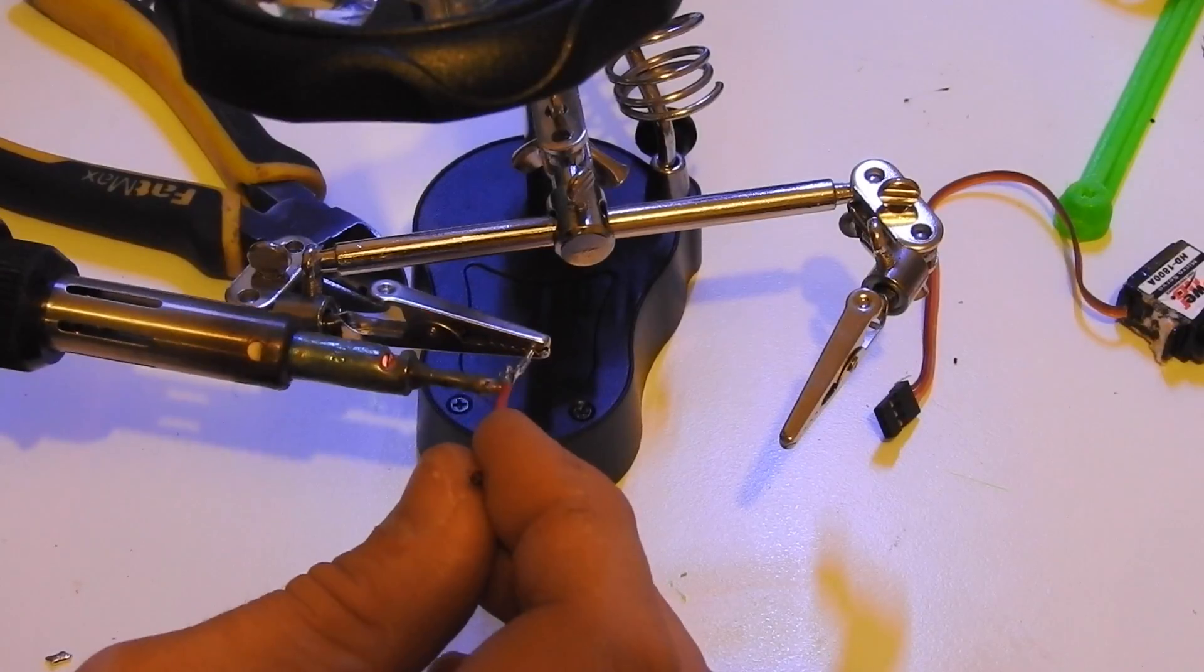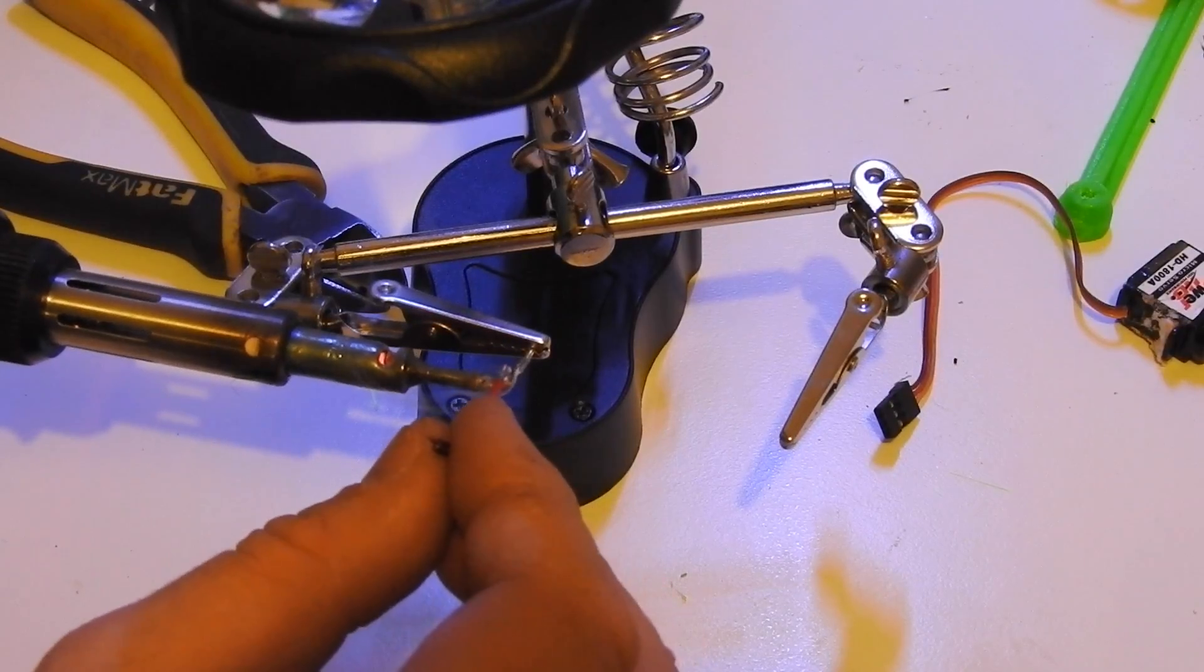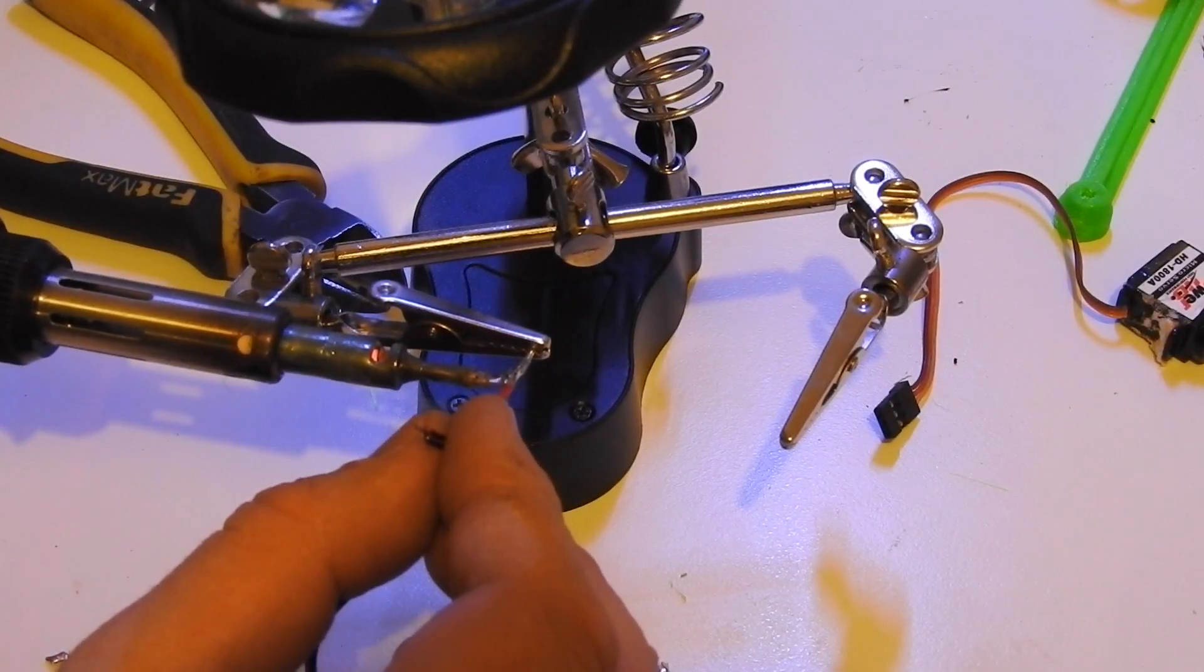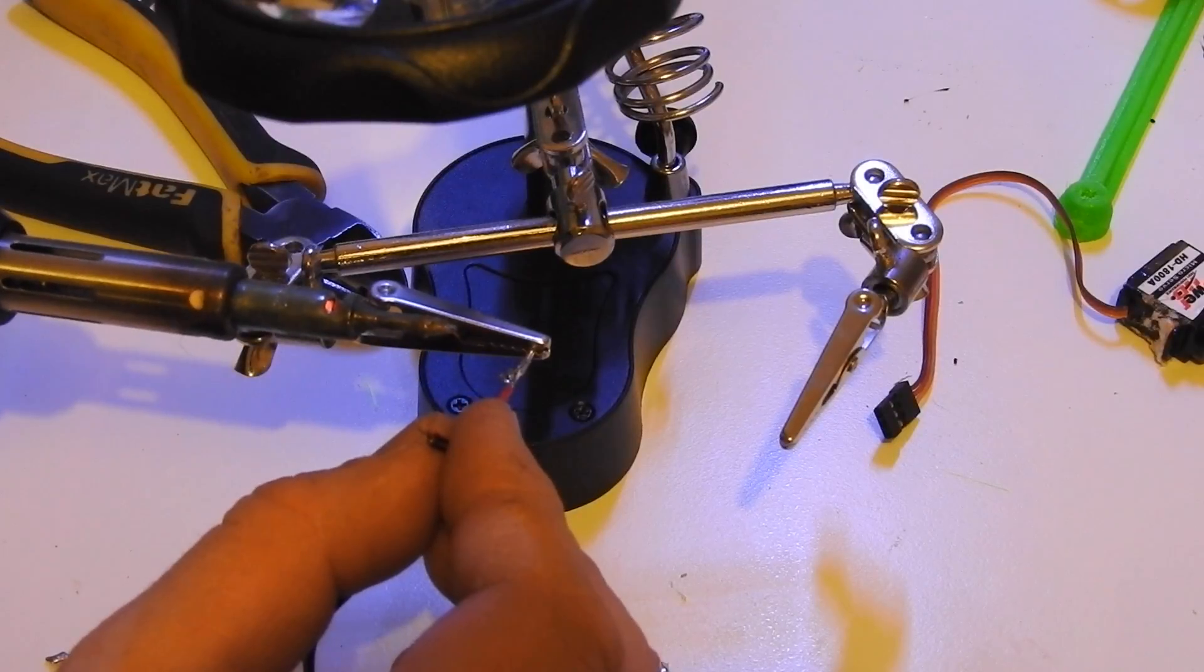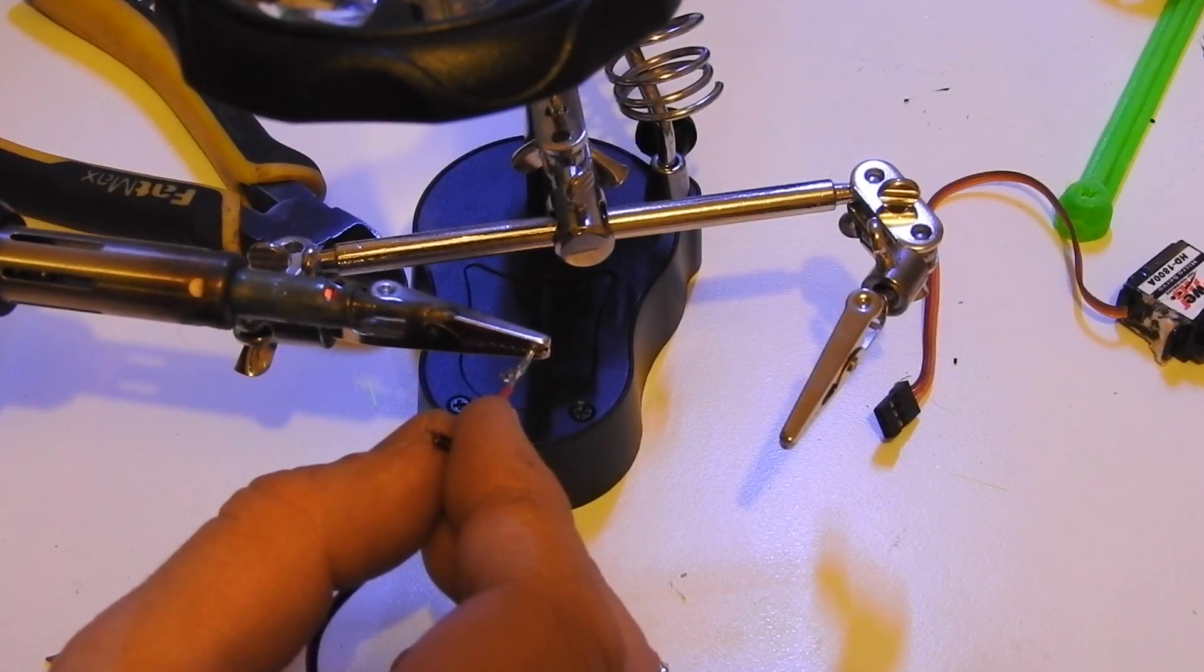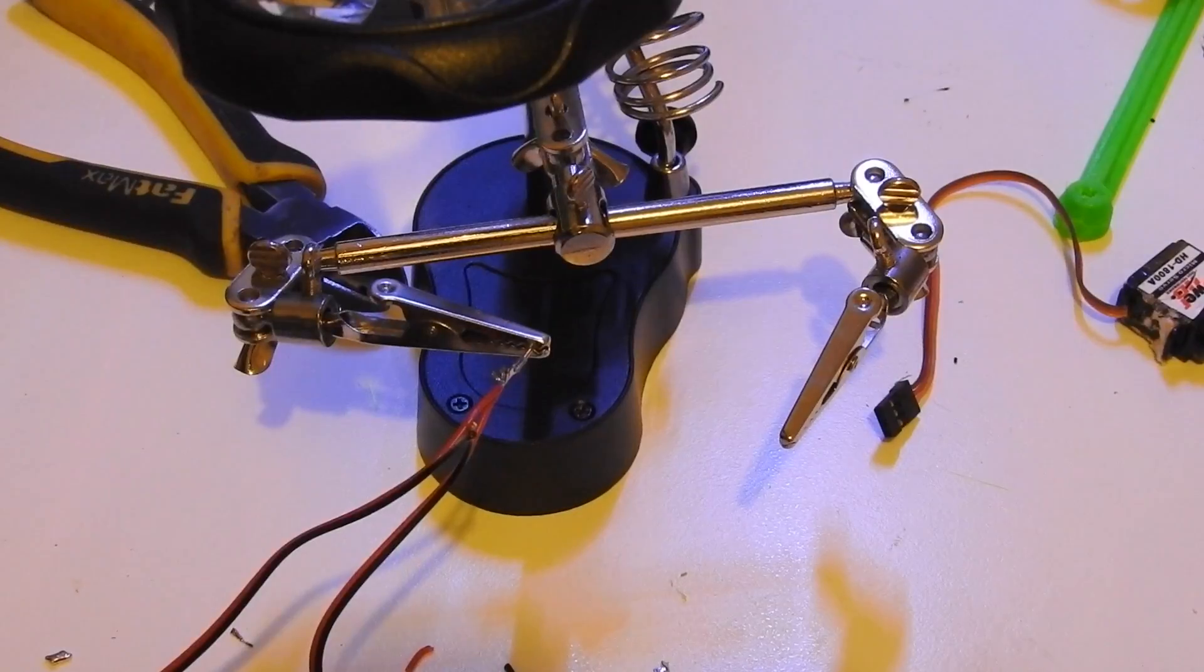Okay so next you're going to want to add a little bit of solder to the JSA pin connector. And then heat it up and just add the wire. That's it. And then just repeat.